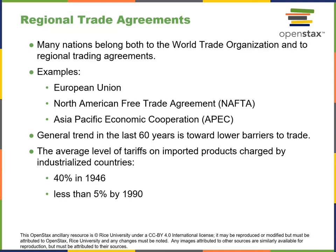Regional trade agreements include several: the European Union amongst themselves, the North American Free Trade Agreement — NAFTA — which has been replaced by the US-Canada-Mexico Agreement, and the Asia-Pacific Economic Cooperation. The trend over the last 60 years has been lower barriers to trade. The average level of tariffs on imported goods charged by an industrialized country was 40% in 1946, fresh after World War II, dropping to less than 5% in 1999. But the world is always changing and those numbers are about to readjust.